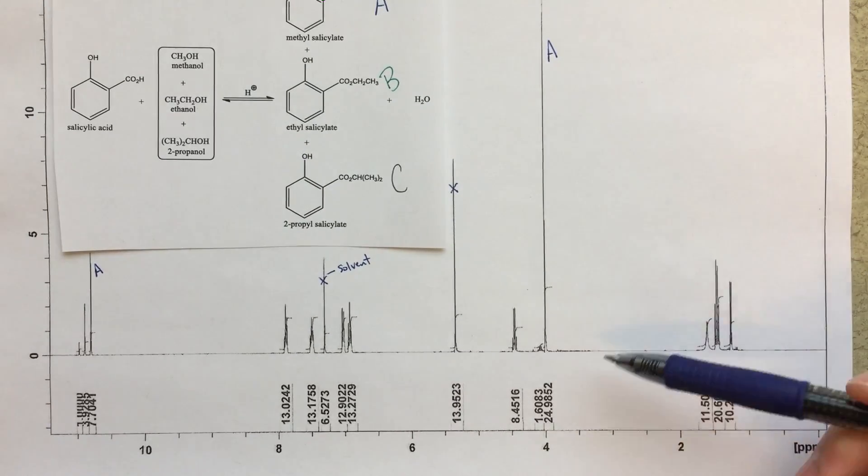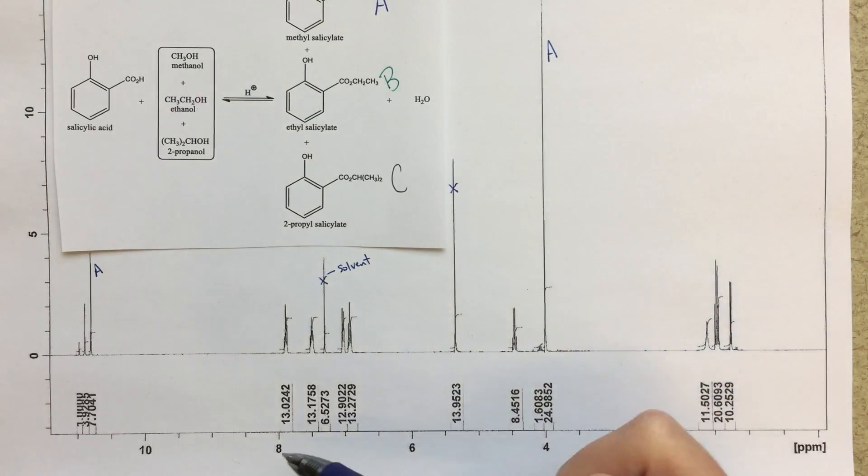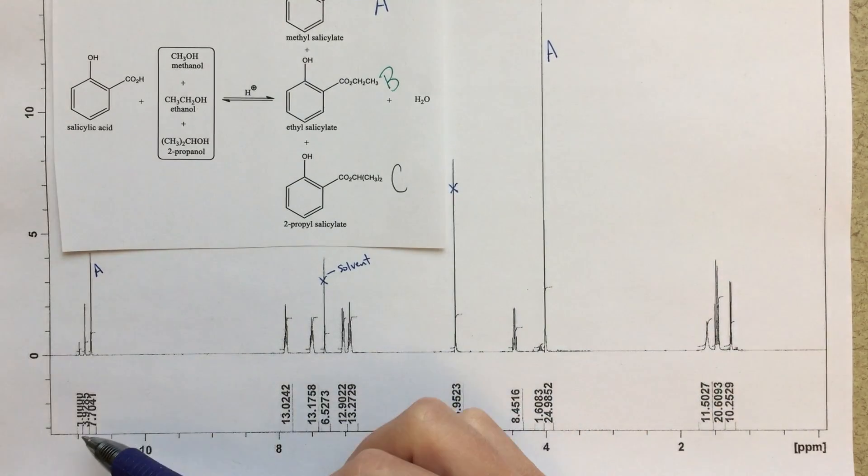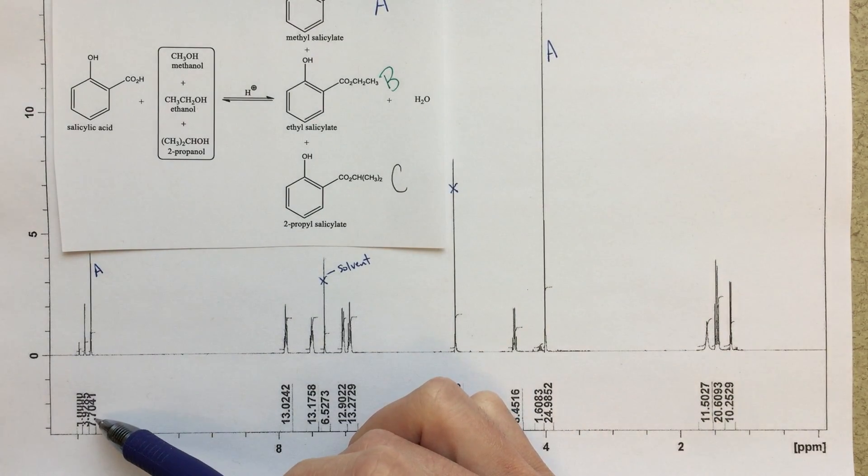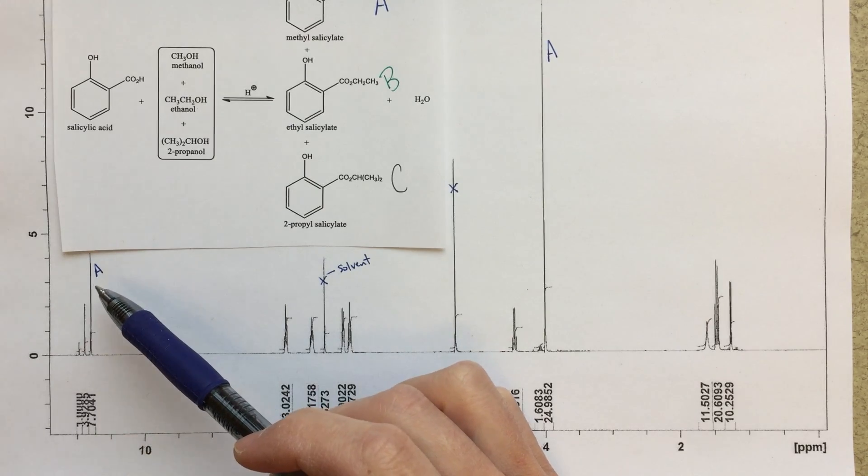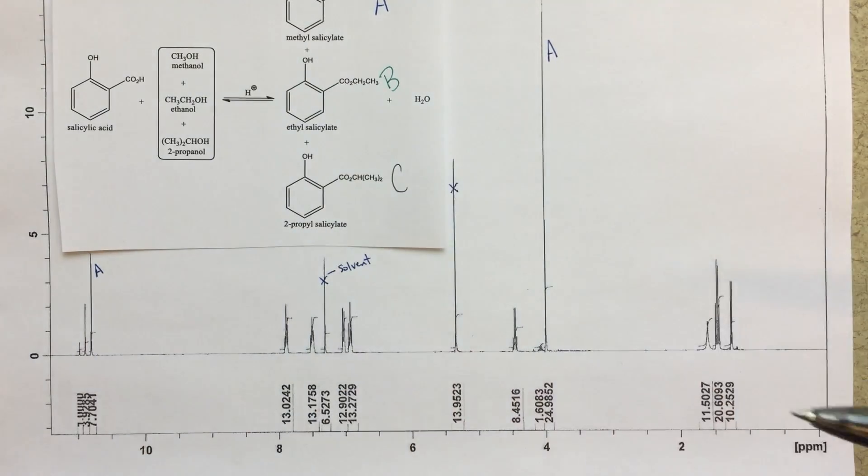So this OH should only be one third the height of this big methyl group. The integrations that we're given, 24.9 and then a third of that will be close to eight, and we've got something that integrates to 7.7 here. So I think that we can identify this peak as belonging to A.